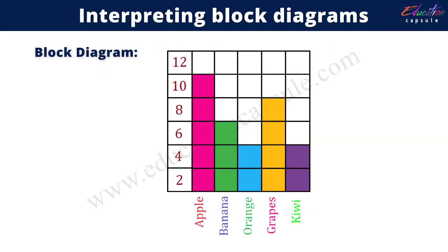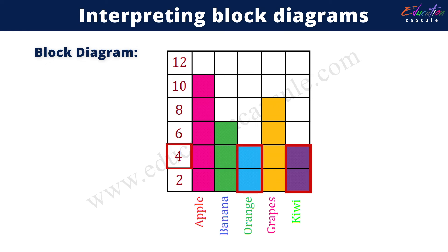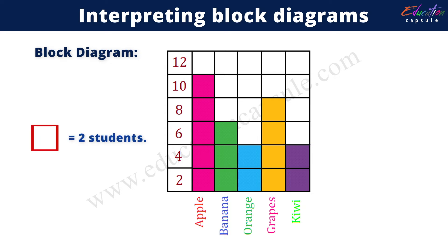Here is the block diagram for the same. The fruit's name is written at the bottom of the graph, whereas the number of fruits is written along the side. The least number is 4 and the highest number is 10. There should be no gap between the bars and each square should be of the same size. In the graph given, each square is worth 2 students.